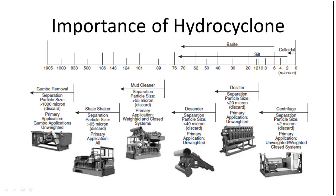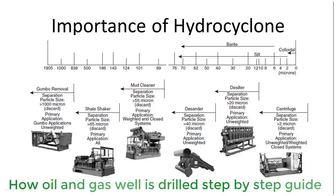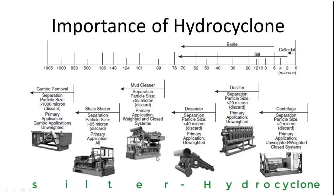If we don't use the desander and desilter downstream of the shale shaker and feed directly to the centrifuge, the centrifuge will not be able to handle the solid concentration in the mud. It will have a lot of problems like increased torque and clogging of solids inside the centrifuge. Also, the centrifuge is designed to handle only 20 to 30 percent of the drilling fluid circulation rate, so it will not help us maintain the drilling mud properties. That's why we need the desander and desilter in between the shale shaker and centrifuge.